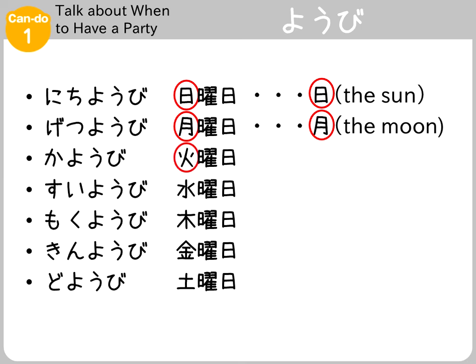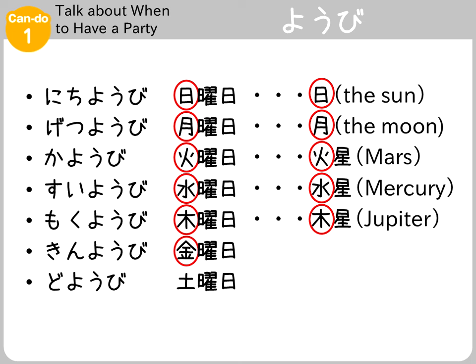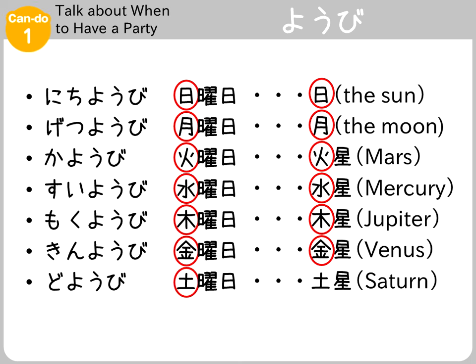Ka in Kayobi, Tuesday — the ka in Kasei, Mars. Sui in Suiyobi, Wednesday — the sui in Suisei, Mercury. Moku in Mokuyobi, Thursday — the Moku in Mokusei, Jupiter. Kin in Kinyobi, Friday — the kin in Kinsei, Venus. Do in Doyobi, Saturday — the Do in Dosei, Saturn.